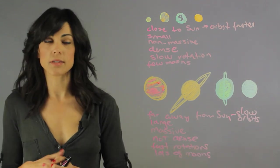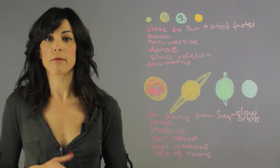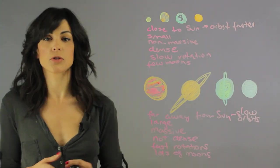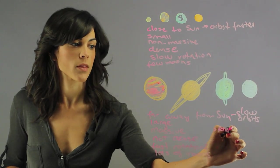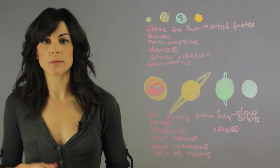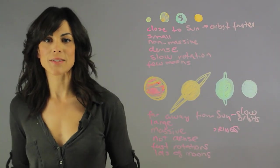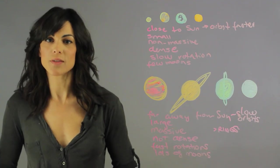And then the last difference is that the inner planets don't have ring systems, but the outer planets do have rings. And those are some of the differences between the inner planets and the outer planets. My name is Aileen Perez, and I'm an astrophysicist.